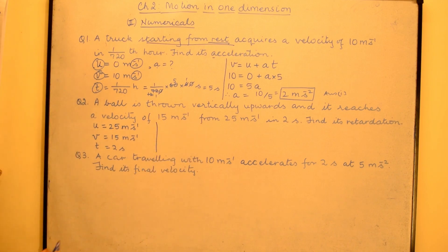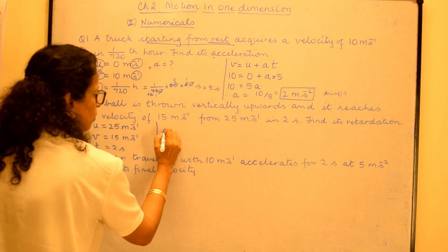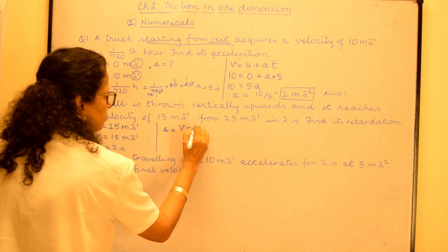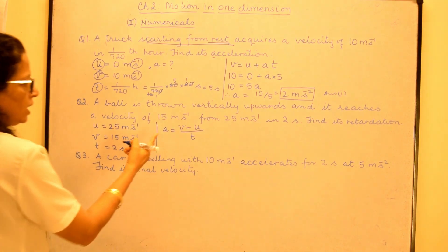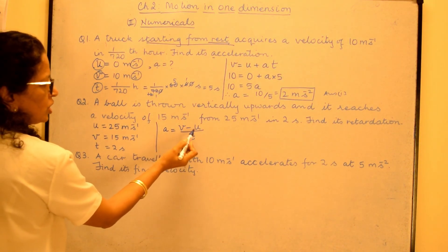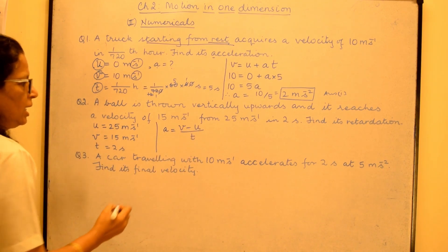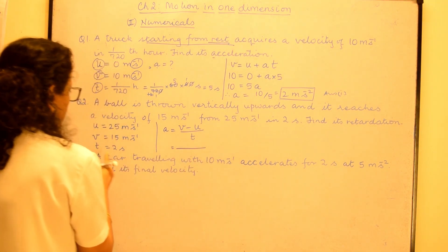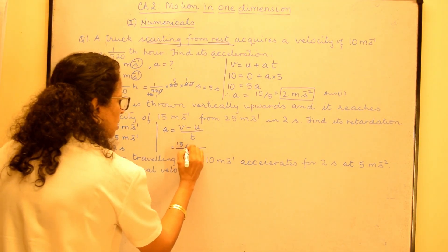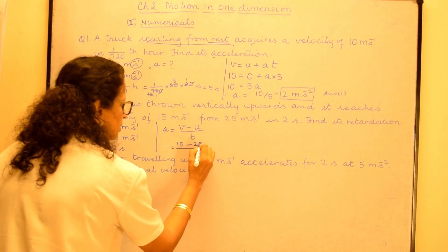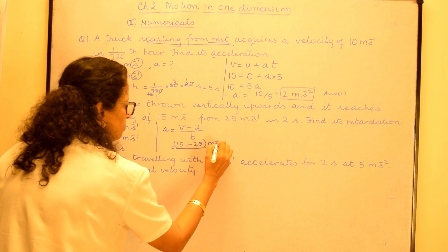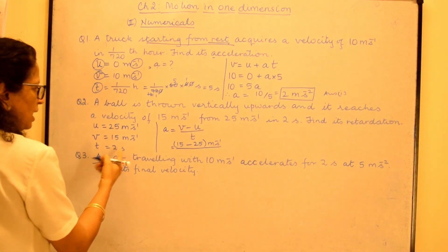Now retardation is negative acceleration. So we take the formula connecting a, u, v and t. And this time let us not use this. We will use the original one. That is a is equal to v minus u upon t. How do we get this formula? It is the rate of change of velocity. So that is acceleration rate of change of velocity. Now if you substitute the values, v is 15 minus u is 25. I will put the bracket and I will write the unit per meter per second. And time is 2 seconds.